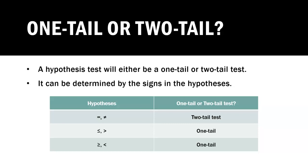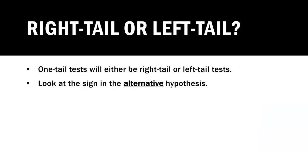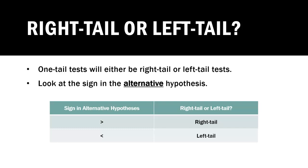If it's a one-tail test, there's another question we have to ask ourselves: is it a right tail or a left tail? For that answer, we look at the signs in our alternative hypothesis. If our sign is greater than, it's a right-tail test. If our sign is less than, it's a left-tail test.